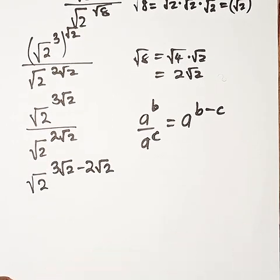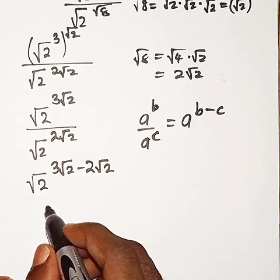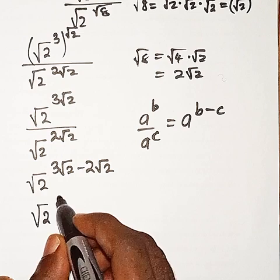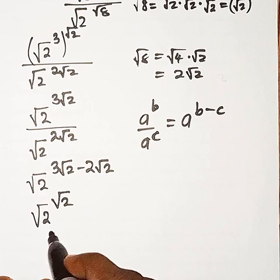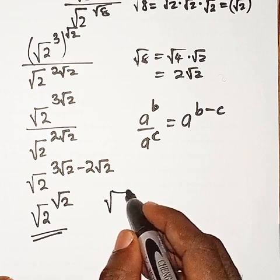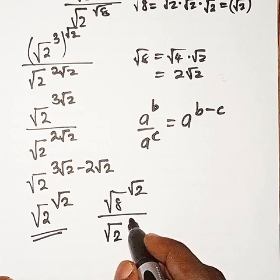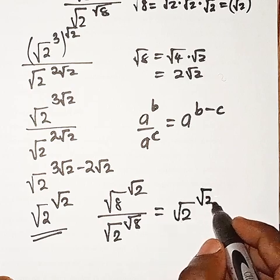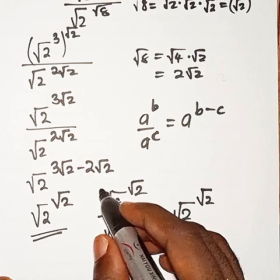From there, you can see that 3 root 2 minus 2 root 2 will give us root 2. Therefore, we have root 2 raised to power root 2, and that is the final answer. Therefore, root 8 raised to root 2 divided by root 2 raised to root 8 equals root 2 raised to power root 2. That is the solution to the problem.